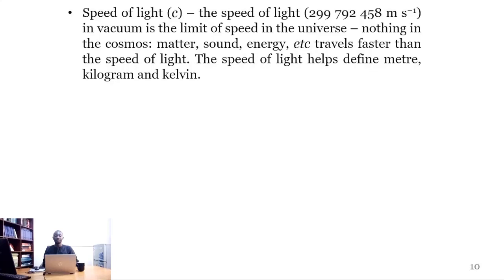Speed of light has the value 299,792,458 meters per second and it sets the speed limit of all objects in the universe. That is to say that nothing in the cosmos - matter, energy, sound, etc. - travels faster than the speed of light. The speed of light helps define meter, kilogram, and kelvin.